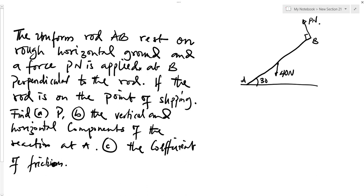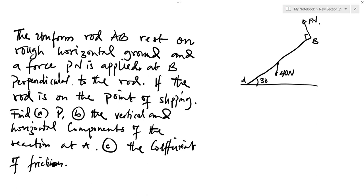The uniform rod AB rests on rough horizontal ground and a force P is applied at B perpendicular to the rod. If the rod is on the point of slipping, find: P; the vertical and horizontal components of the reaction at A; and the coefficient of friction.